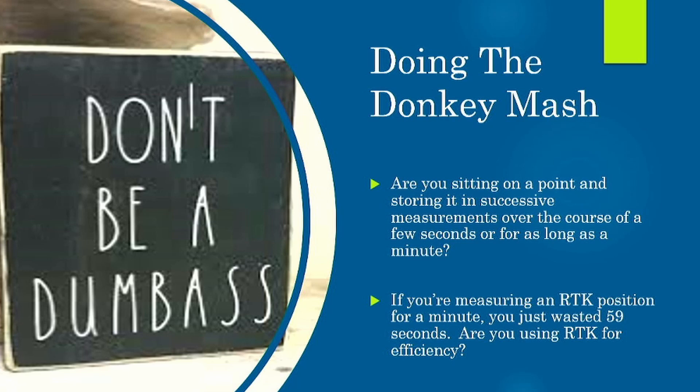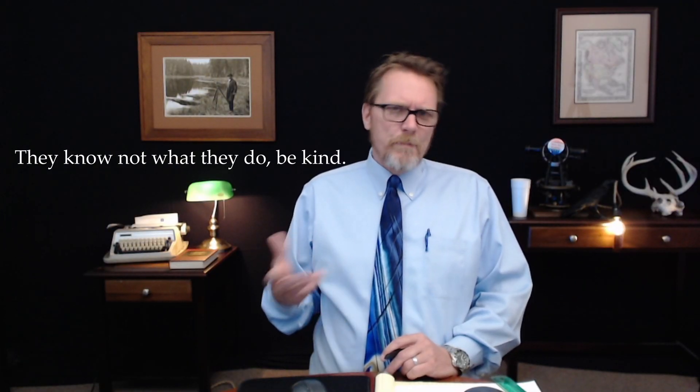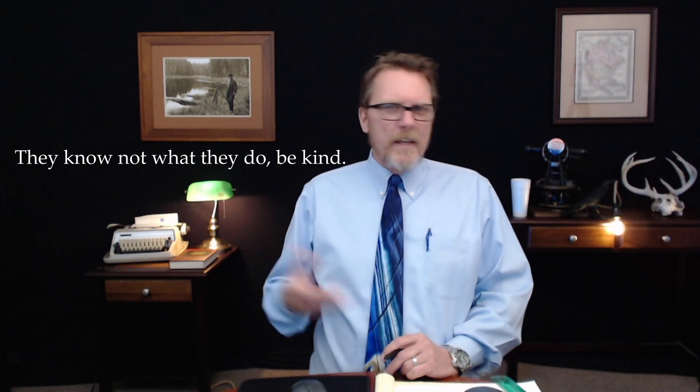If you're surveying with RTK, the presumption is it's to be efficient and to save time. But if you're standing on a point pushing a button and collecting a shot every second or every ten seconds, that's not very efficient. We call that the donkey mash — where you just sit there pushing the button mindlessly, thinking your solution is getting better when technically it's not. When you take a single measurement, looking at these graphs, it's really no better or no worse to take five. To take five is essentially wasting time. If you know somebody doing the donkey mash, it's better just to look away — they mean no harm, they know not what they do.